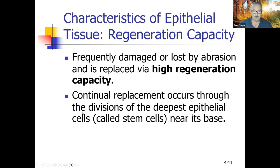Continual replacement occurs through cell division. The deepest epithelial cells are called stem cells — you may have heard of these. Stem cells can divide and become many different kinds of cells near the base of the epithelium.